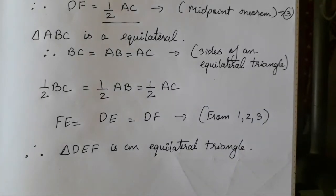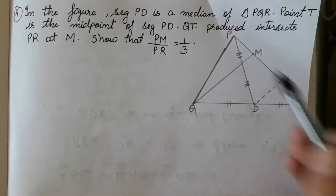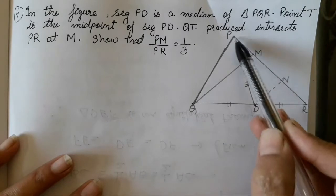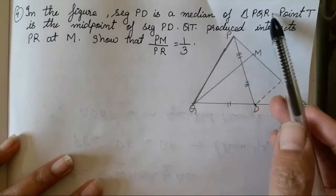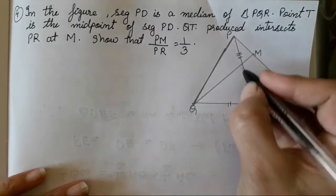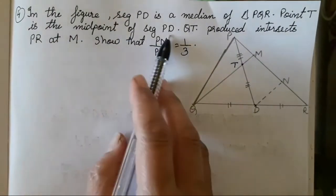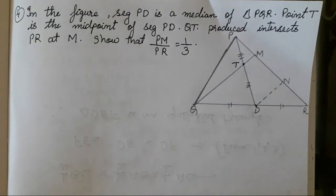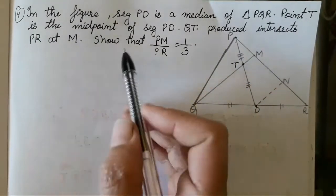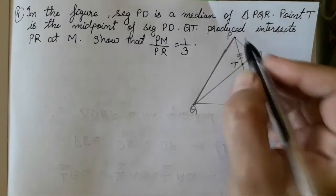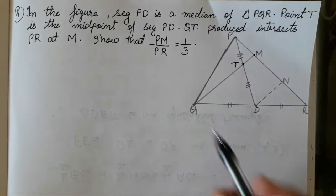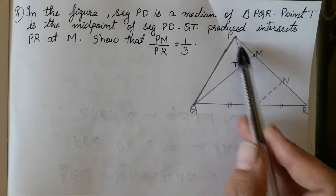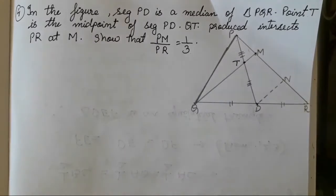Wasn't it easy? Let's do the last sum — question number 4. In the figure, segment PD is the median of triangle PQR. Point T is the midpoint of PD. QT produced intersects PR at M. We have to show that PM upon PR is equal to one third.